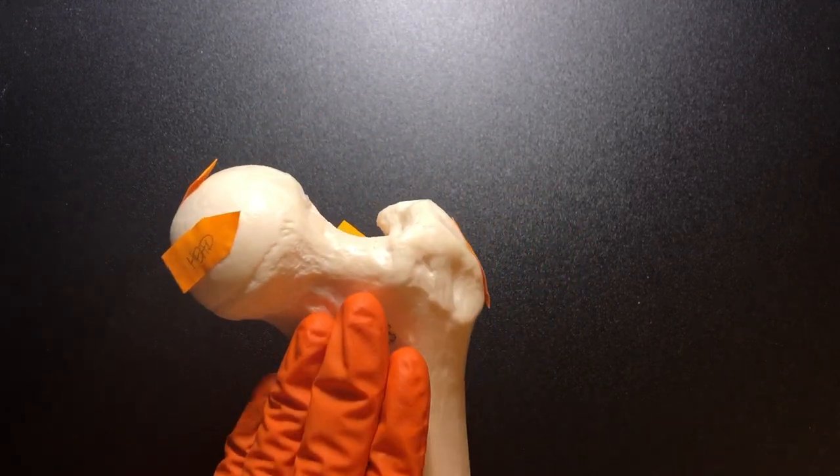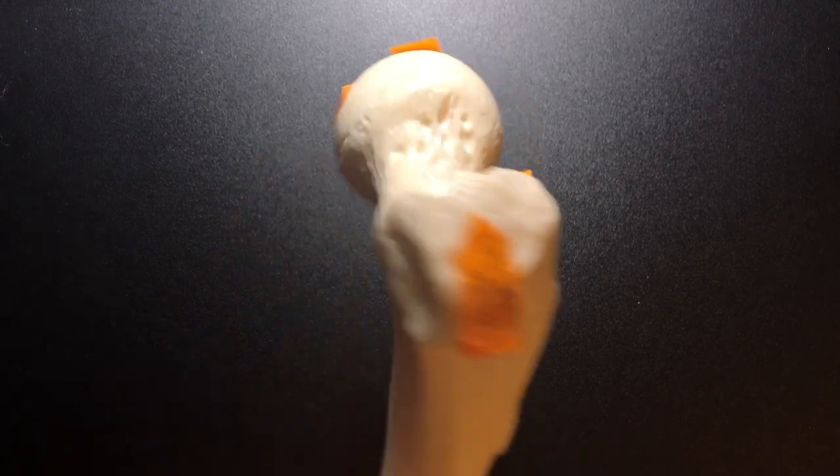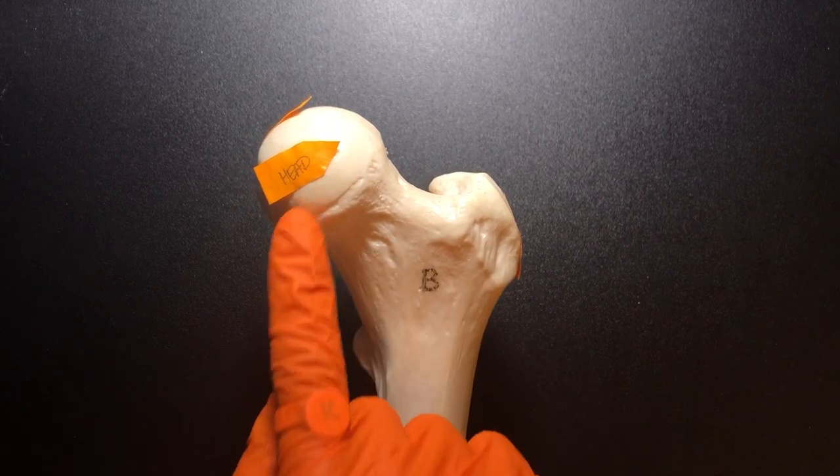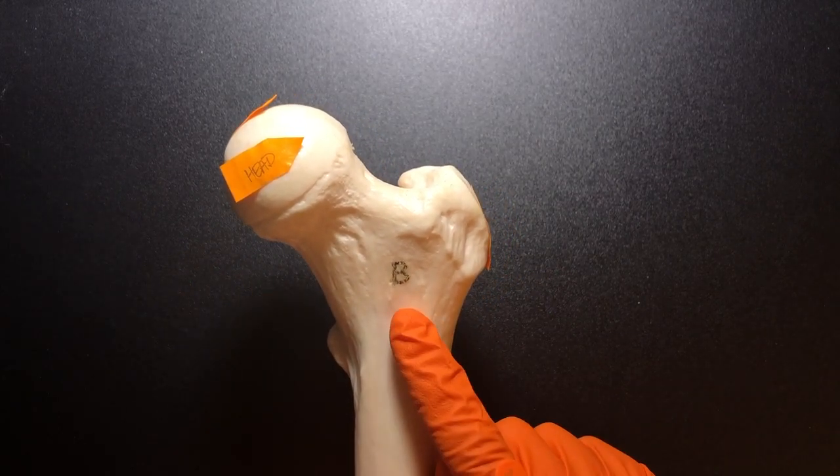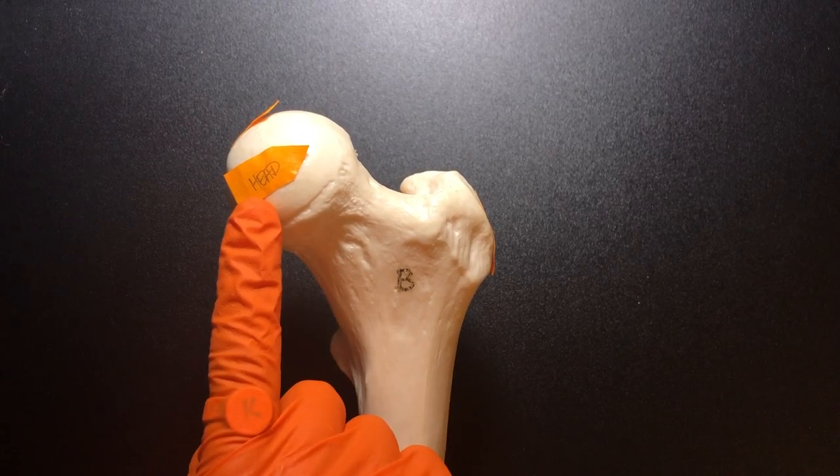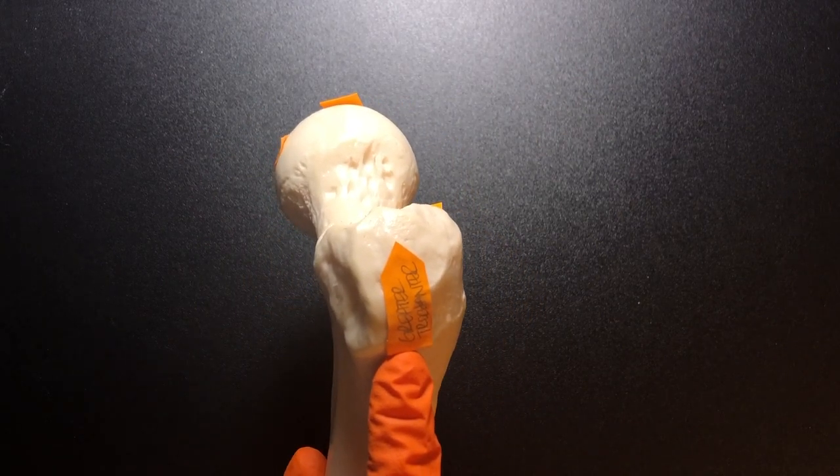By the way, this is the anterior side and this is the posterior side. So if you know that this is anterior and that the head is going medially, that means this is the left femur. So the head is medial. The greater trochanter is lateral.